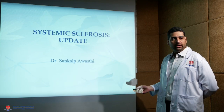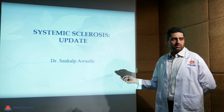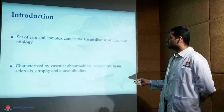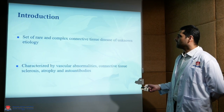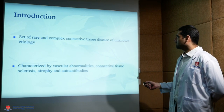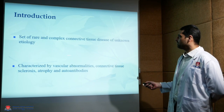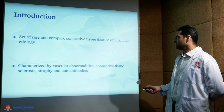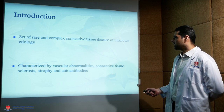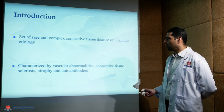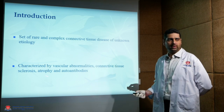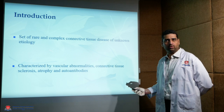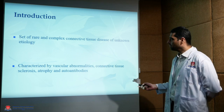Good afternoon. Today I will be talking about systemic sclerosis. It is a set of rare and complex connective tissue disease of unknown etiology, characterized by vascular abnormalities, connective tissue sclerosis, atrophy, and various autoantibodies.